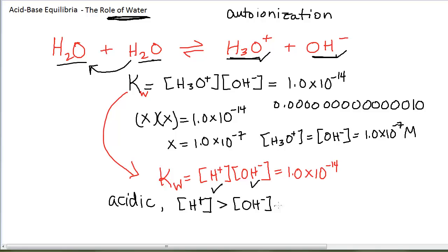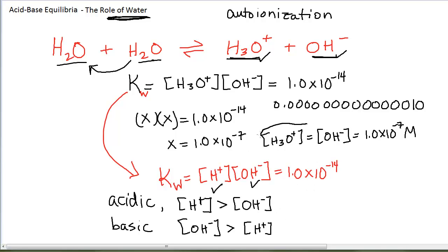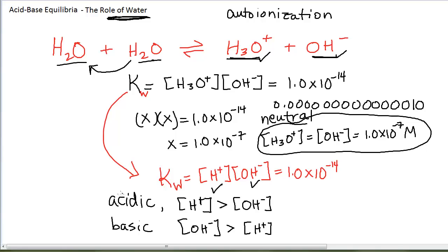In an acidic solution, there will still be some hydroxide ion — it will just be an incredibly small amount. In a basic solution, something added to water produces hydroxide ion, so the OH- concentration gets bigger and the H+ concentration gets smaller. There will still be some H+ in a basic solution, just a really, really small amount. In a neutral solution, H+ and OH- are equal. We can put some numbers on this.